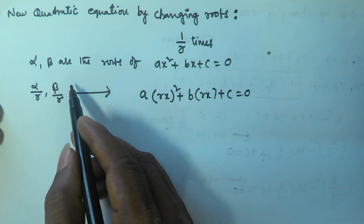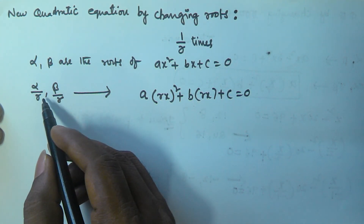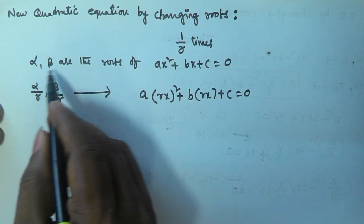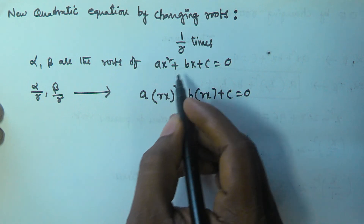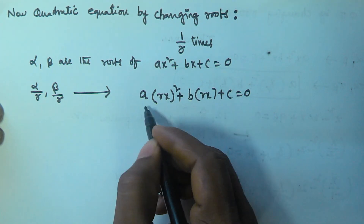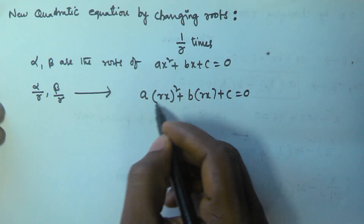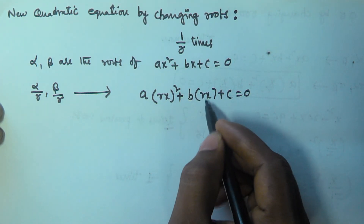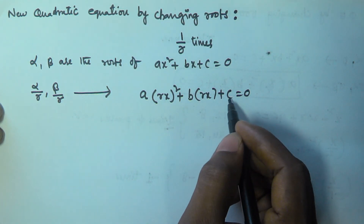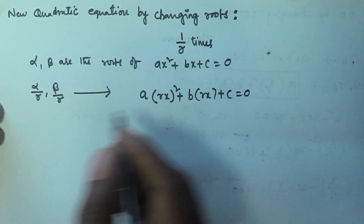So if the roots are 1 by r times of the previous roots, then the new quadratic equation is given by A of rx squared plus B of rx plus C equals zero.